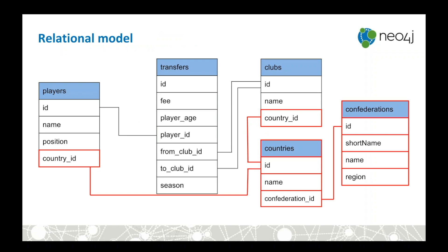For the relational migration, the changes highlighted in the schema diagram are: on the players table, nationality becomes a foreign key country_id linking to a new countries table. The clubs table also gets a country_id column. The countries table links to a new confederations table via a foreign key/primary key relationship.